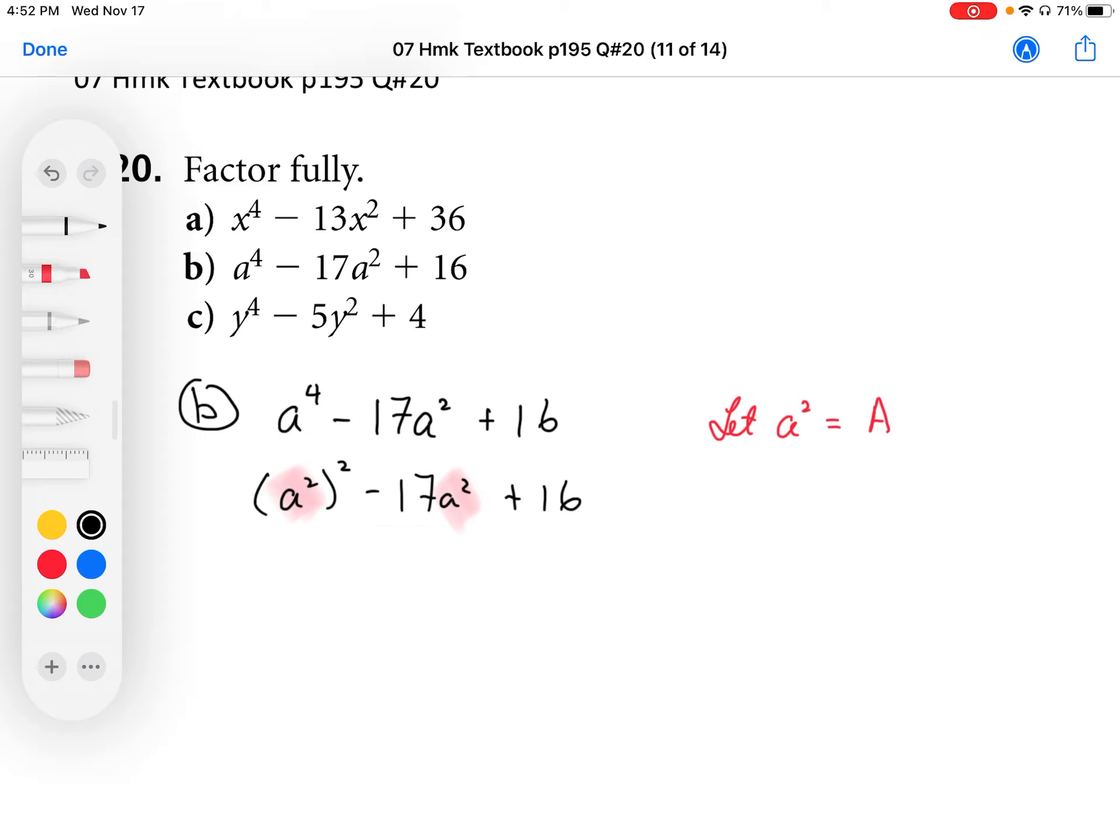Factoring 20b is very similar to 20a. We have a fourth degree polynomial, a fourth degree here, a squared here, and a constant term here.